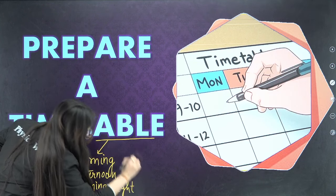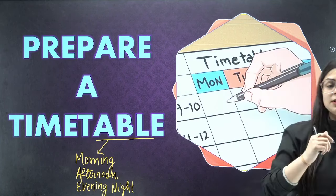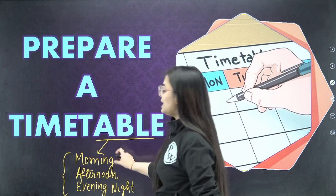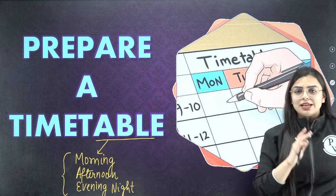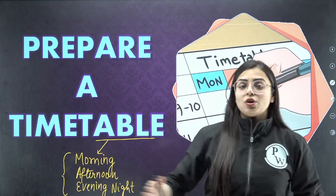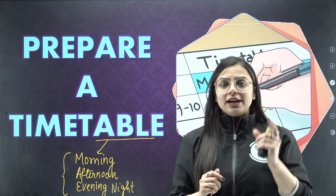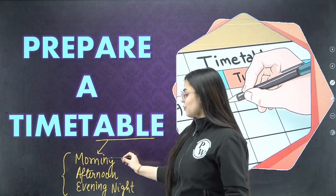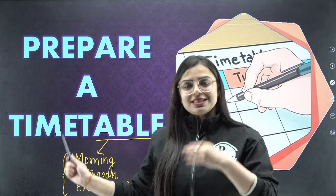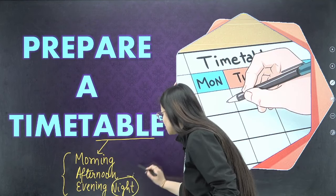In these four slots, divide your three major subjects. For example, assign physics to one slot, maths to another, and chemistry to another. You can also assign specific topics within those slots. Since exams are still a few days away, you have time to distribute your syllabus across morning, afternoon, and evening sessions.